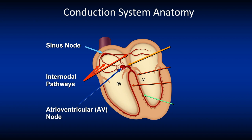The AV Node is an anatomically complicated network of fibers. These fibers converge at its lower margin to form a discrete bundle of fibers called the Bundle of His. This structure penetrates the Annulus Fibrosis and arrives at the upper margin of the Muscular Intra-Ventricular Septum, where the Bundle of His gives origin to the bundle branches.